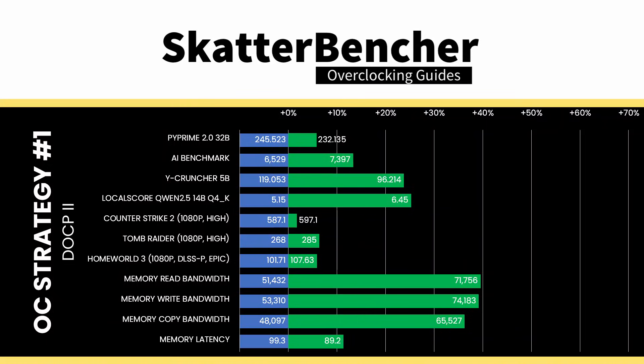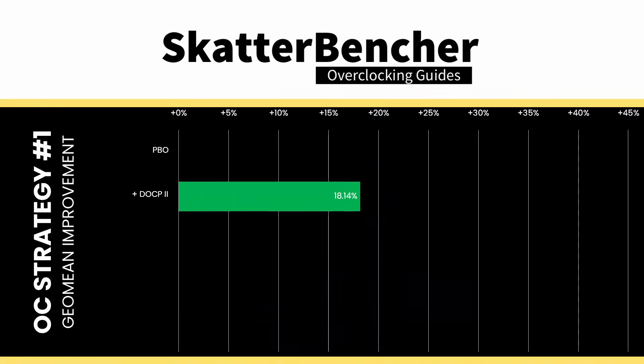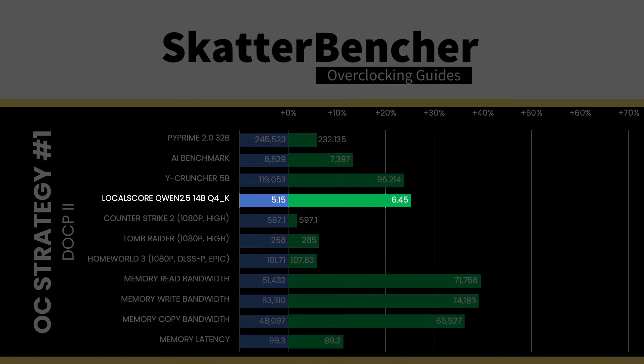Generally, synthetic benchmarks benefit more, but we also see a decent uplift in compute. However, gaming workloads, not so much. The GeoMean performance speedup is plus 16.95%, and we get a maximum benchmark improvement of plus 25.24% in local score.